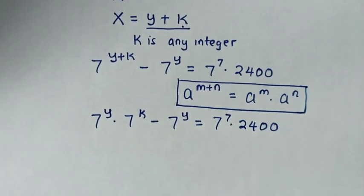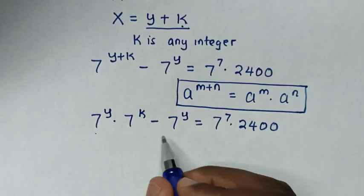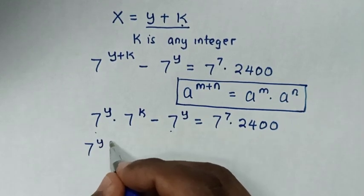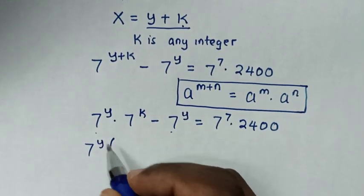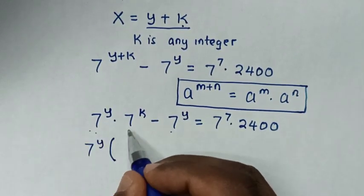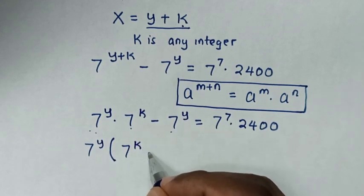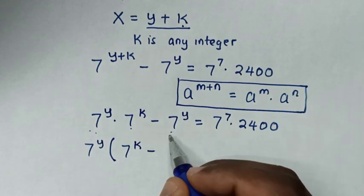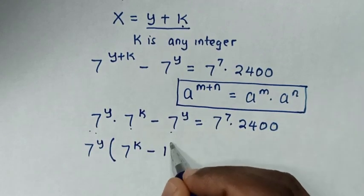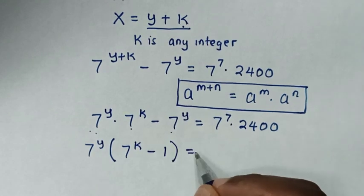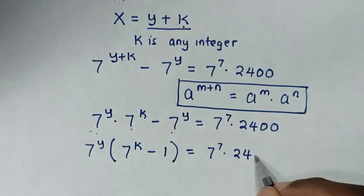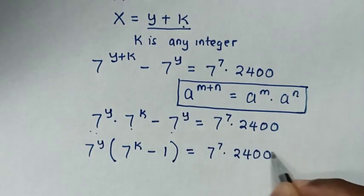Then in the next step, 7 power of y is common, so we take 7 power of y out of the bracket. Then this divided by this is 7 power of k, minus this divided by this is 1, in bracket, is equal to 7 power of 7 times 2400.